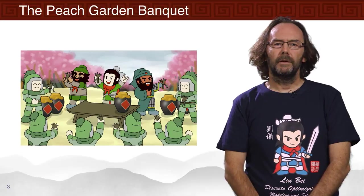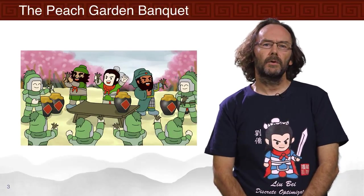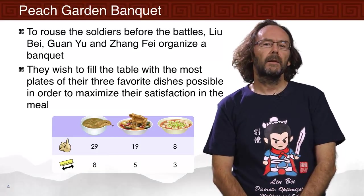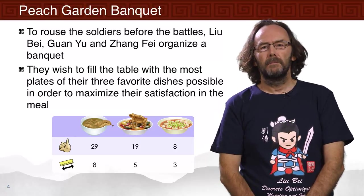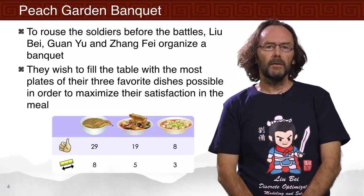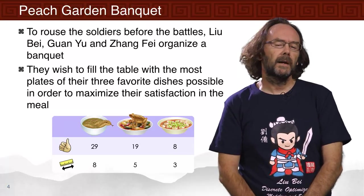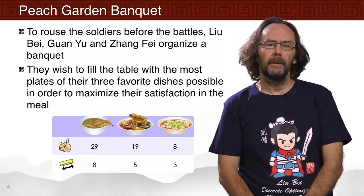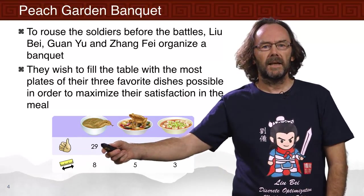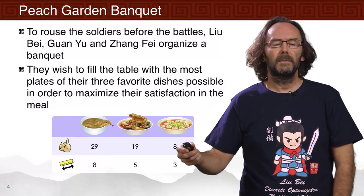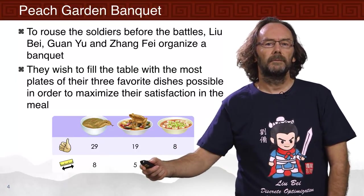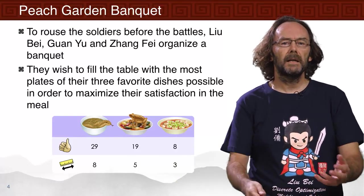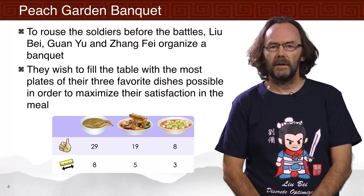In order to increase the morale of their army, our heroes want to organise a banquet for both themselves and the rest of the army, and try to make the most pleasing banquet possible. So on their own table, they want to fill the table with their three favourite dishes: snake soup, kung bao frogs and mapo tofu. Each of these has a satisfaction rating and a size, and the table has limited capacity. Basically, they want to put as many of these dishes on the table as they can to maximise their satisfaction in the meal.